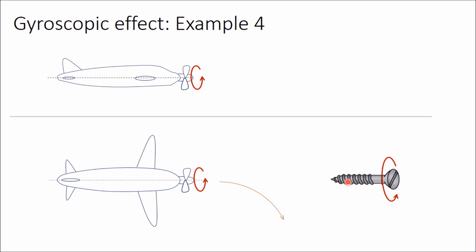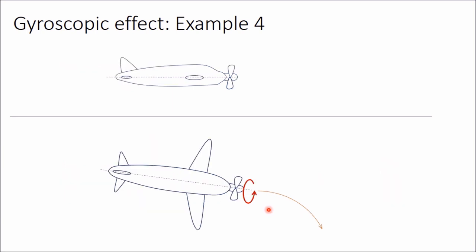Now, using the right-hand screw rule, if you want to represent this angular velocity or angular momentum, you can draw the angular momentum vector in this direction — because if the propeller is rotating in anticlockwise direction, the screw will move in the right-side direction. That's why I have drawn this vector in this direction. If the plane takes a right turn, from the right-hand screw rule the direction will be here, in this direction.